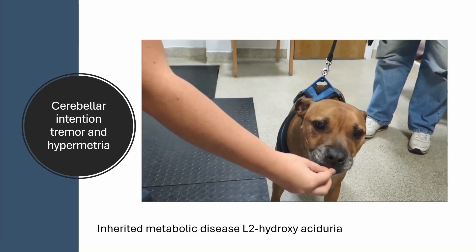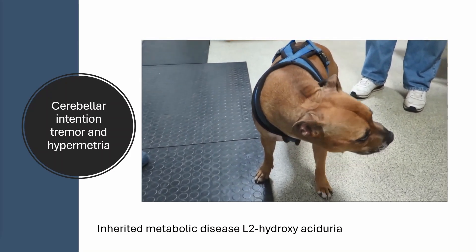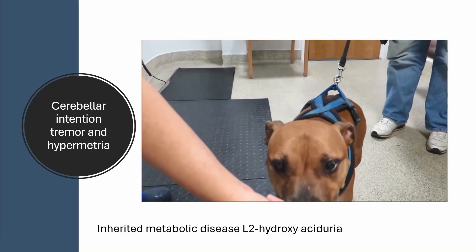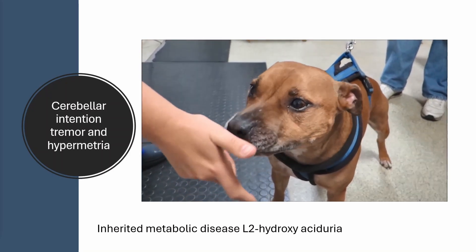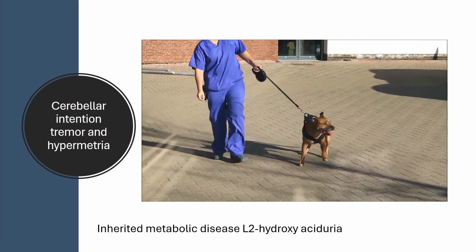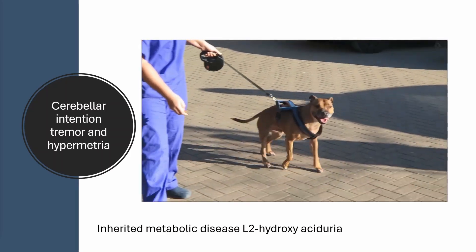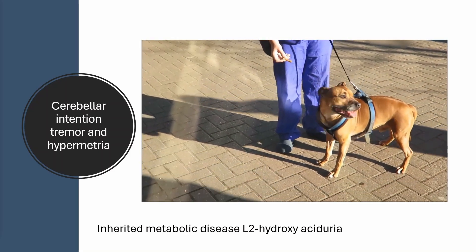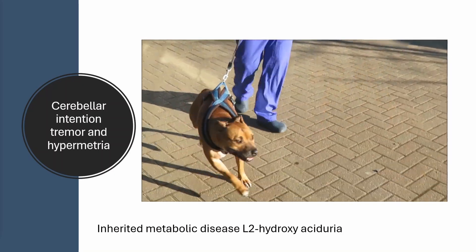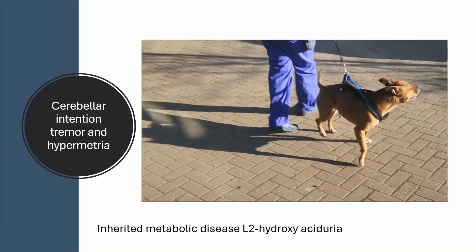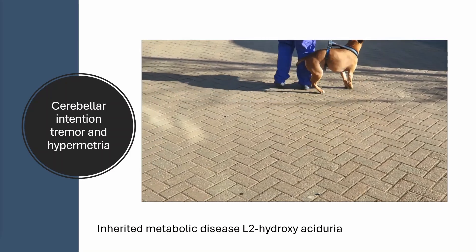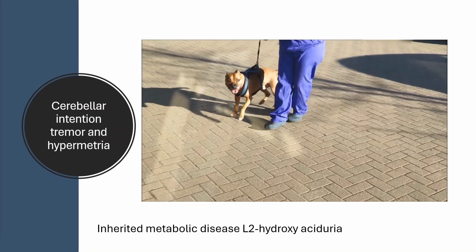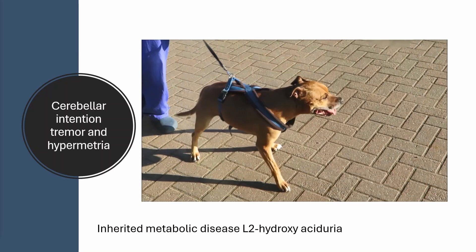Here's another example of cerebellar hypermetria. This dog has generalized cerebellar disease due to the inherited metabolic disease L2 hydroxy aciduria. It has an intention tremor, visible as it goes for a biscuit. Here, a Staffordshire Bull Terrier is walking, and with the increase in tone you can see a much more goose-stepping type gait — without the classic joint flexion seen in the Greyhound — a much stiffer action, particularly in the forelimbs.